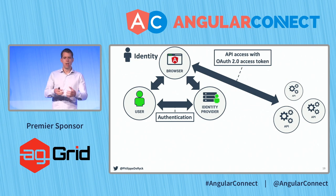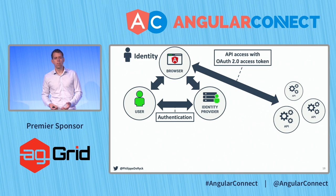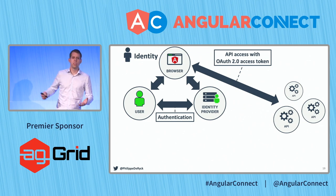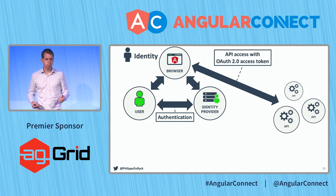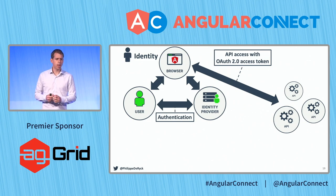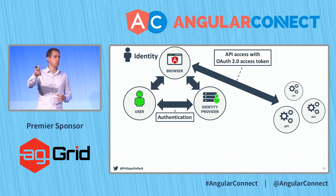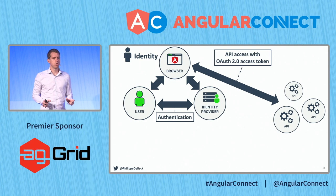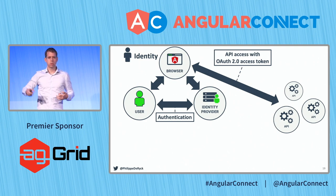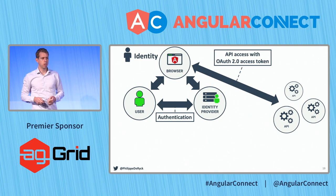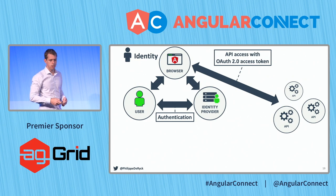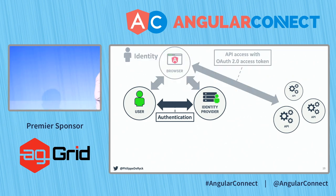For example, if you build an Angular frontend to manage Google Spreadsheet data, you can have the user log in with Google, ask permission to access spreadsheets, and you'll get both an identity token — so you know the user is Philippe — and an access token to access the spreadsheet. That's one way of doing things.